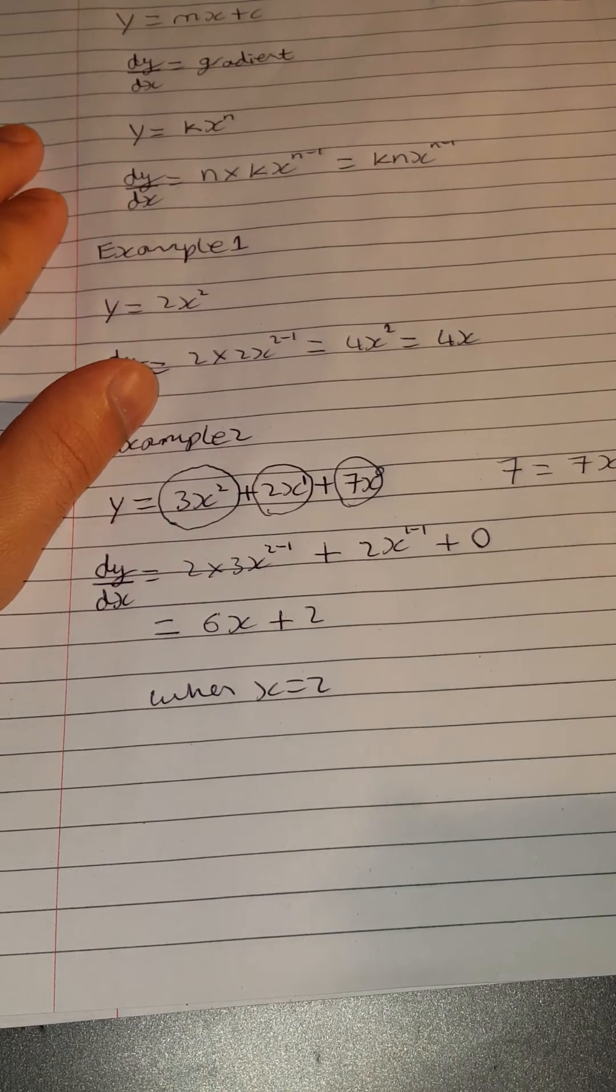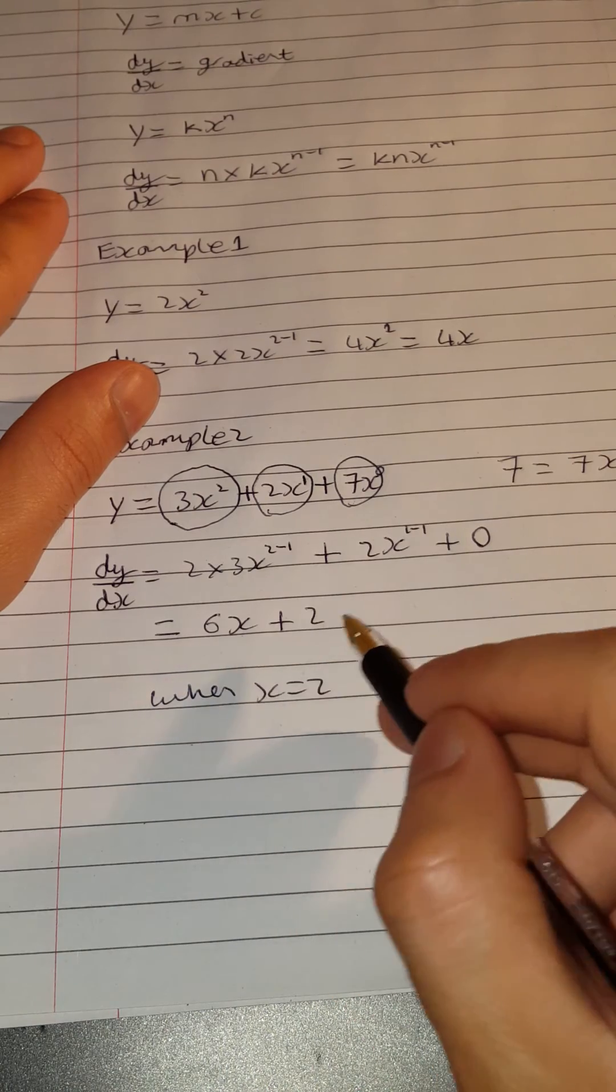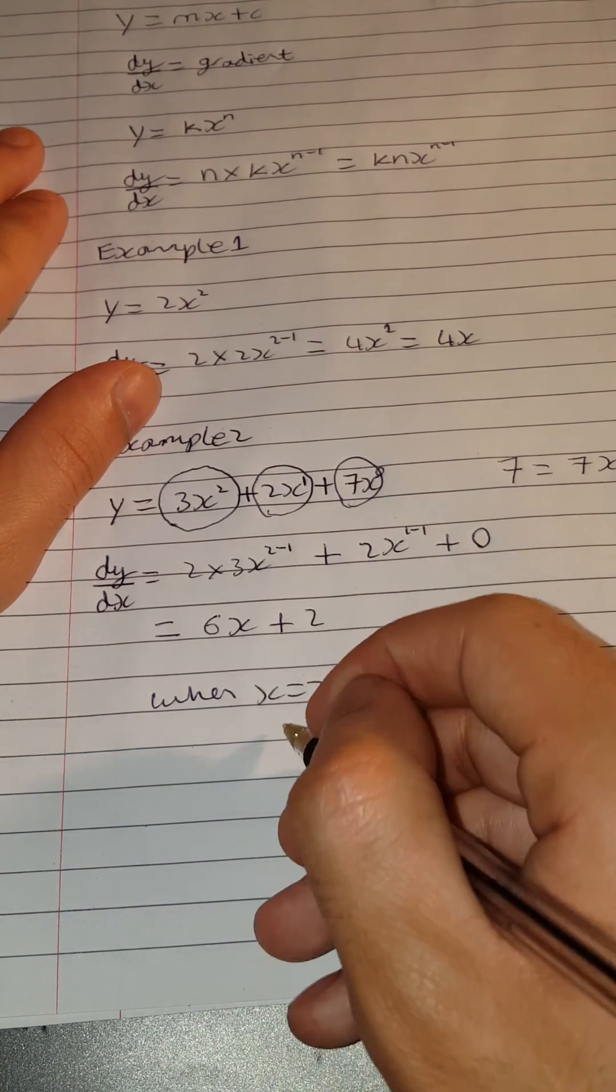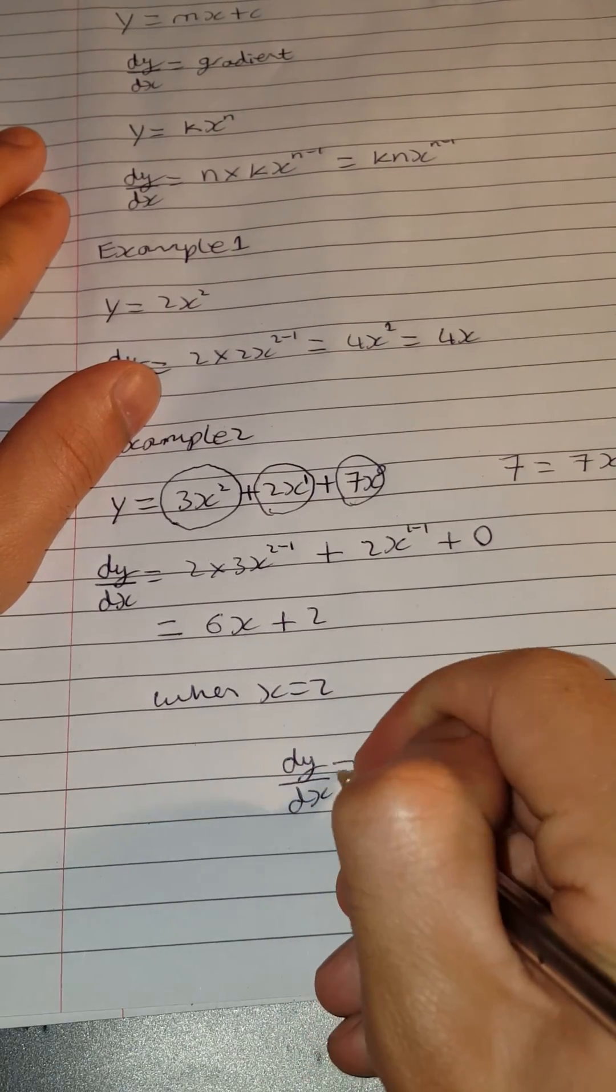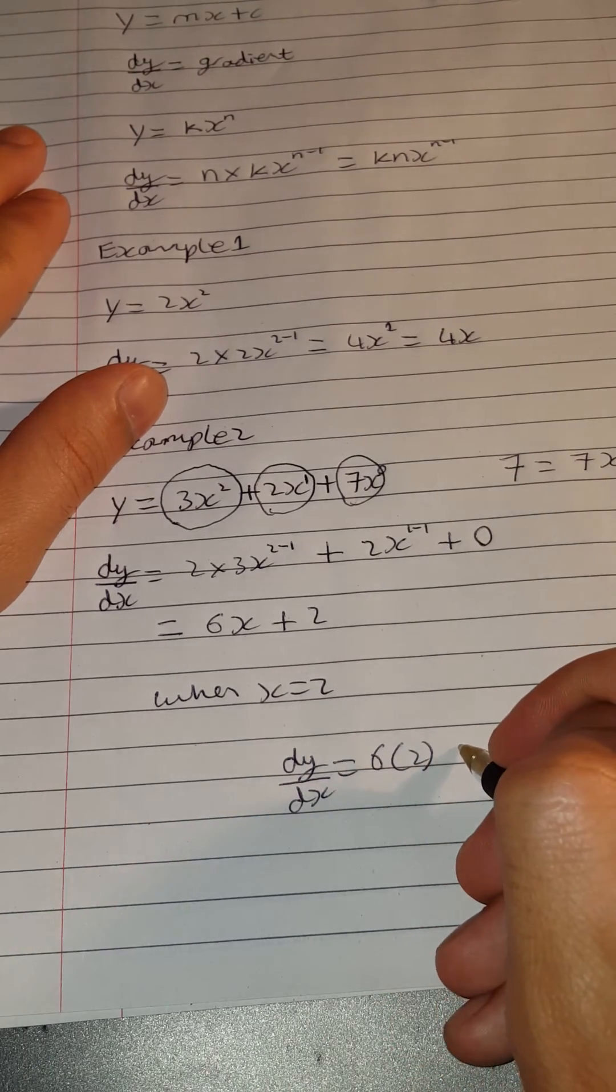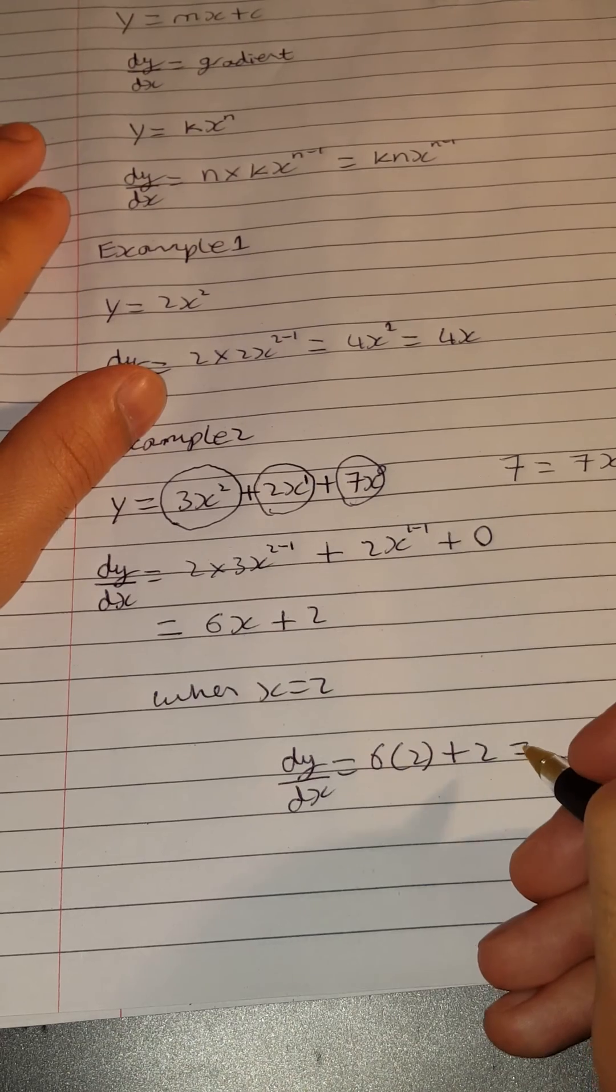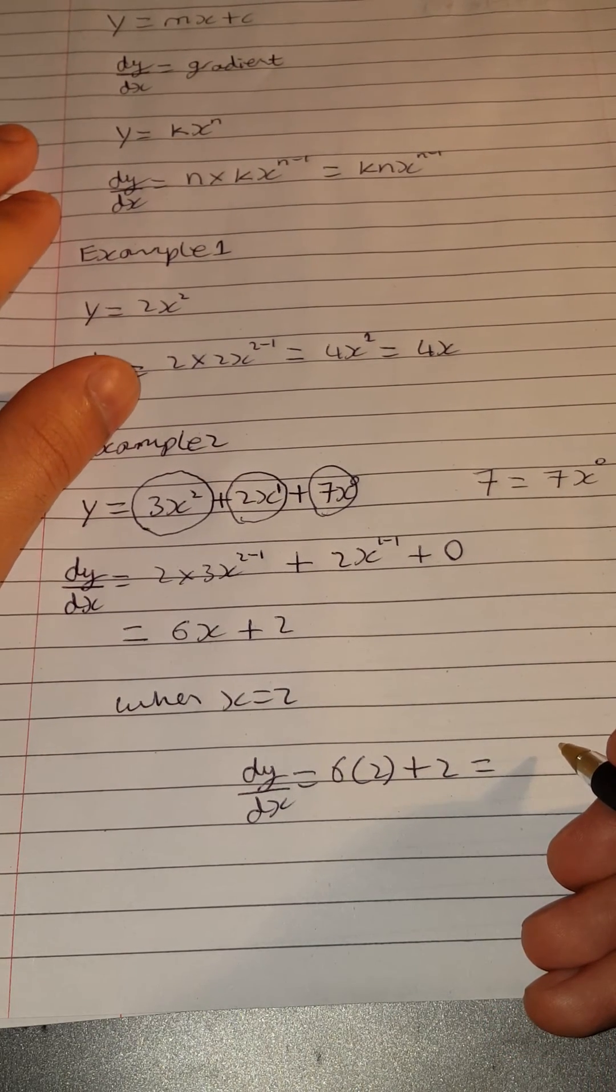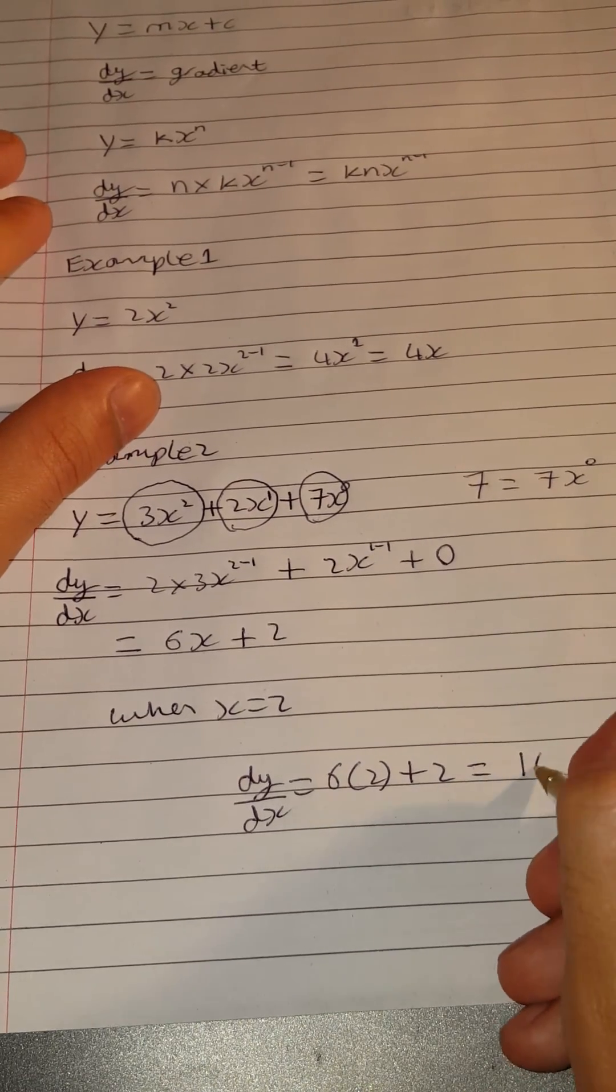Now all we simply need to do is find dy by dx, which equals 6x plus 2, and we need to substitute the 2 into it. So when x equals 2, dy by dx equals 6 multiplied by 2 plus 2. 6 multiplied by 2 is 12, and plus 2 makes it 14. So it just equals 14.